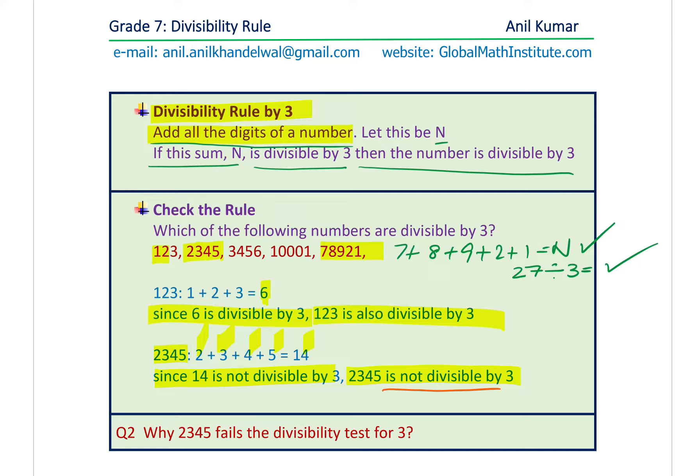Question 2: Why does 2345 fail the divisibility test for 3? Add 2+3+4+5: 5+4=9, 9+5=14. Since 14 is not divisible by 3, the whole number is not divisible by 3.